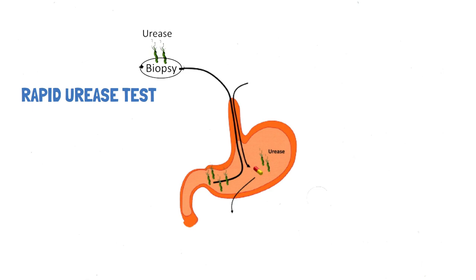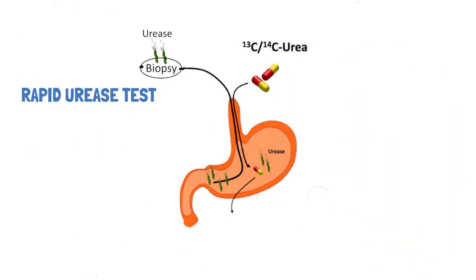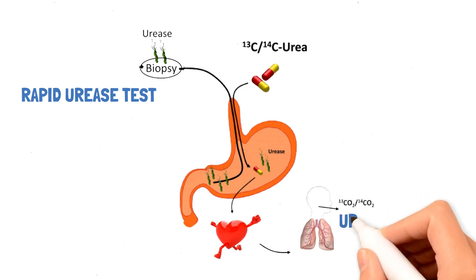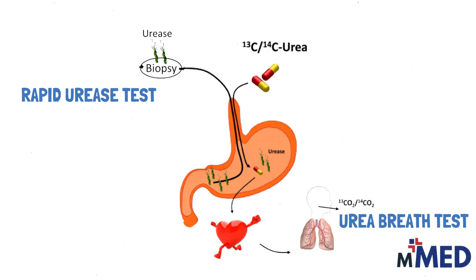Another less invasive way of diagnosing is the urea breath test. A patient will drink radio-labeled urea, and H. pylori will metabolize this urea into radio-labeled carbon dioxide. The patient will then breathe out this specific radio-labeled carbon dioxide into a detector, and we can confirm the presence of H. pylori. That's about it for chronic gastritis — don't forget to check our video on acute gastritis.